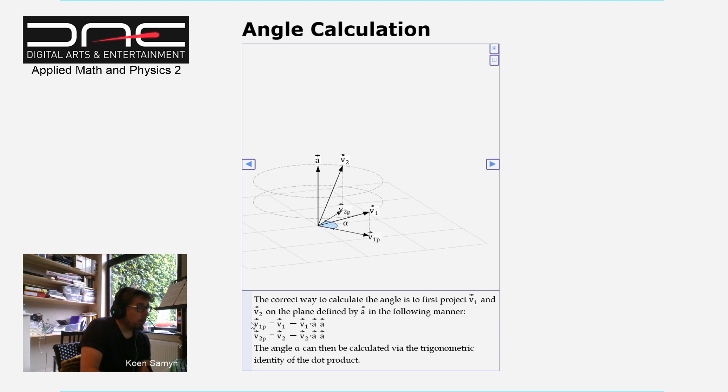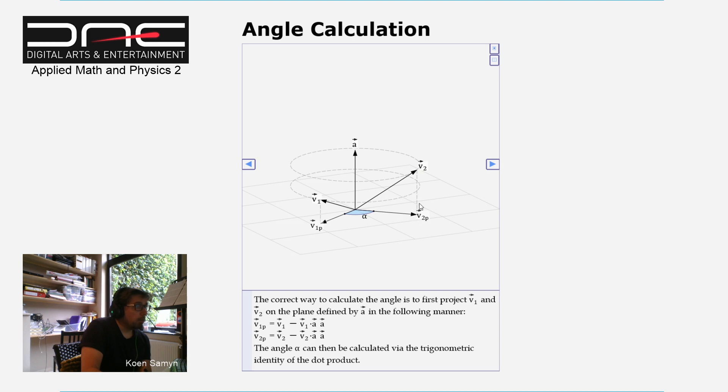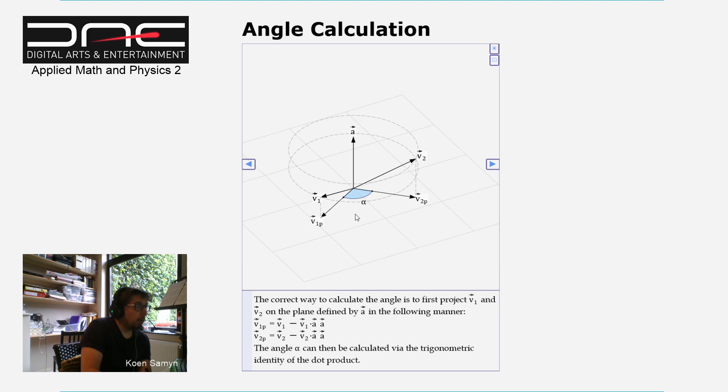And then the projected vector V1P is V1 minus this height times the axis A. So this is a simple projection mechanism that you can use, and you do the same thing for the vector V2. So you also project that down, and now you can calculate the angle of rotation. So this is the angle perpendicular to the axis of rotation.